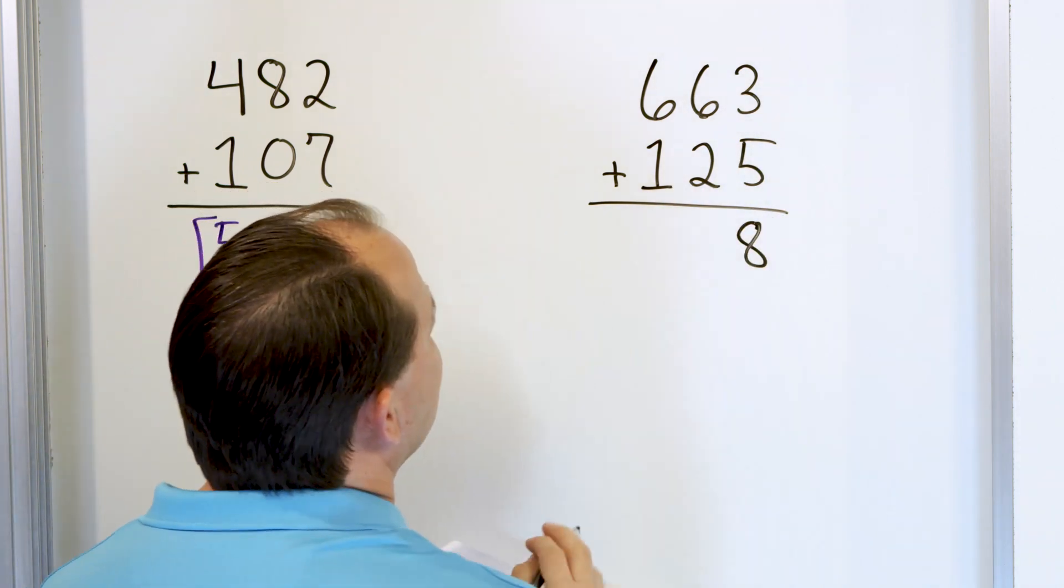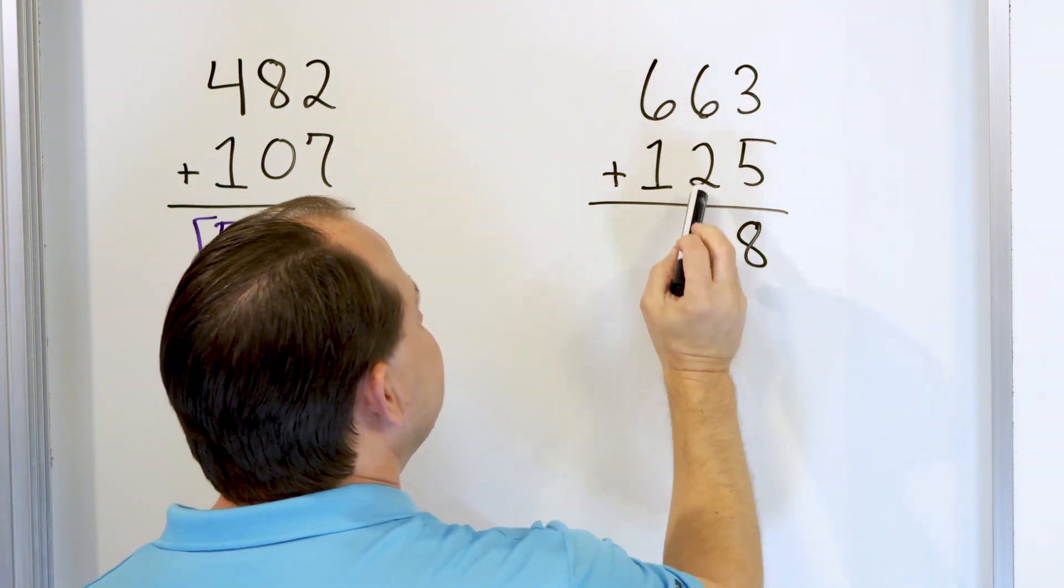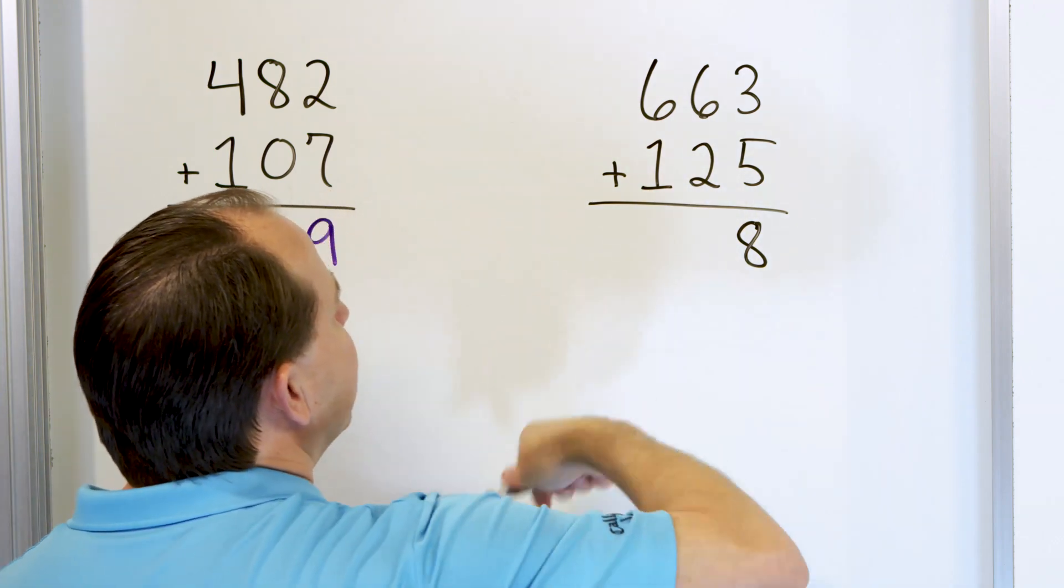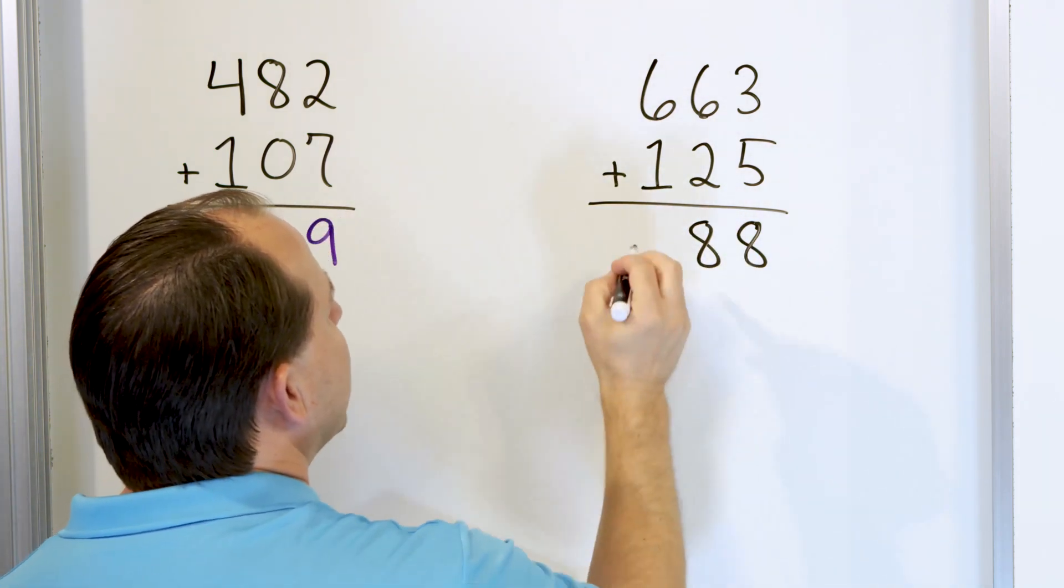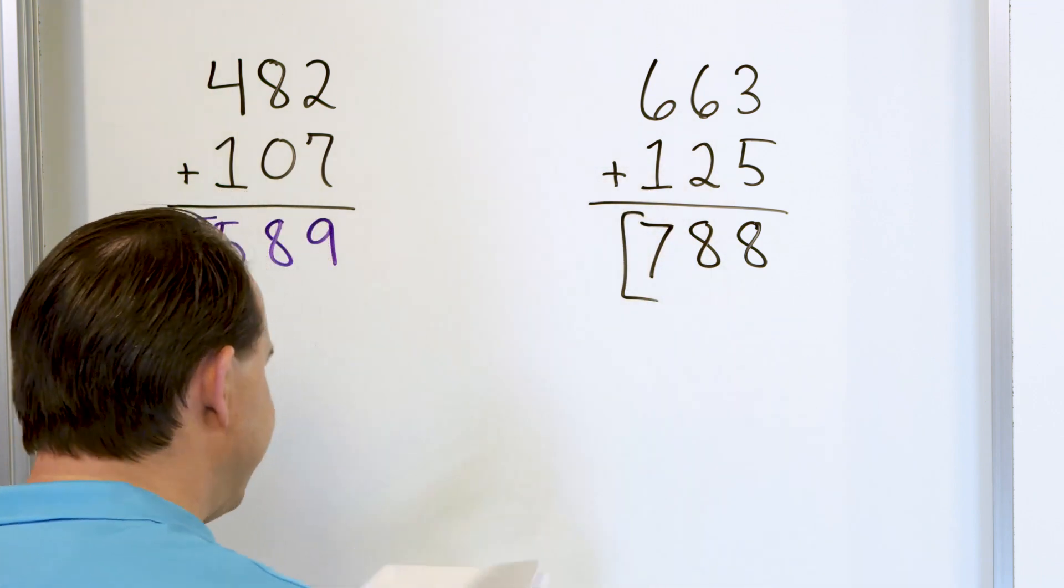So 8 goes in this column right here. And then we start with 6 here, we go up 2 more, 7, 8. So 8 goes in this column right here, and then 6 plus 1 more is 7, and so the answer is 788.